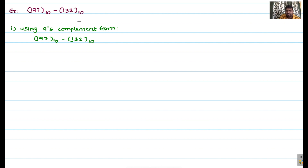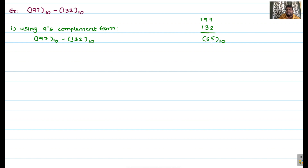For example, 197 minus 132: the normal decimal calculation gives 7 minus 2 is 5, 9 minus 3 is 6, 1 minus 1 is 0. So the resultant is 065, i.e., 65 base 10. Now I will verify the same answer using the 9's complement form.